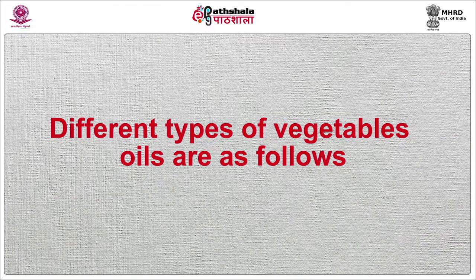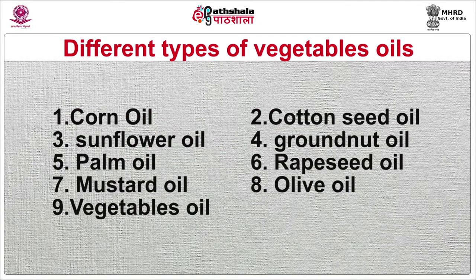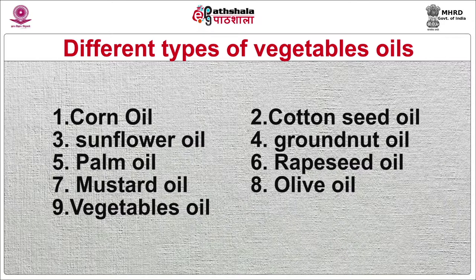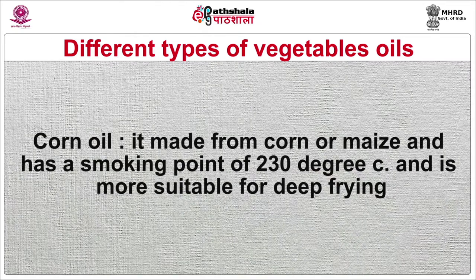Oils are liquid fats. They are often used as shortenings in baking but spread through a batter or dough too thoroughly and shorten too much. Their usefulness is limited primarily to greasing pans, deep frying doughnuts, and serving as a wash for some kinds of rolls. Different types of vegetable oils include corn oil, cotton seed oil, sunflower oil, ground nut oil, palm oil, rapeseed oil, mustard oil, olive oil, and vegetable oil. Corn oil is made from corn or maize and has a smoking point of 230°C, making it more suitable for deep frying. Cotton seed oil is commonly used in cooking and also has a very high smoking point like corn oil.